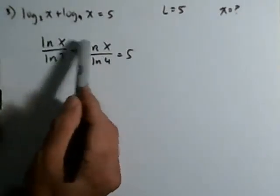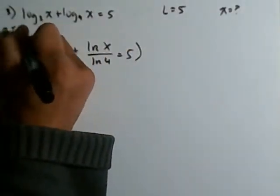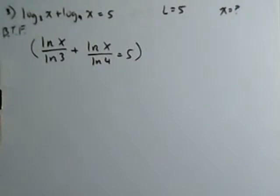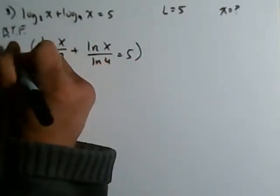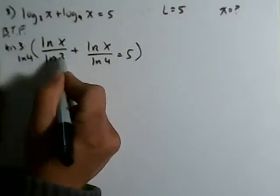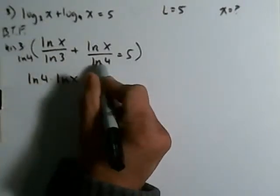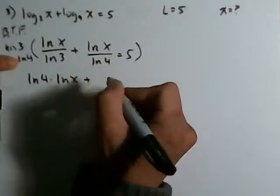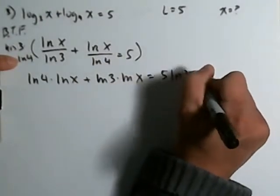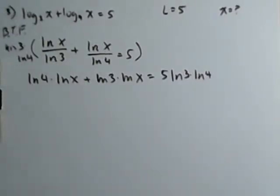At this stage, we're going to bust that fraction — BTF for short. I coined it myself; everyone else calls it fraction busters. We're going to multiply both sides by the natural log of three times the natural log of four. When we multiply the left side, the natural log of three cancels on the first term, giving us natural log of four times natural log of x; and natural log of four cancels on the second term, giving us natural log of three times natural log of x. That equals five times natural log of three times natural log of four on the right side. We busted that fraction.